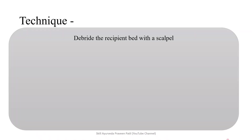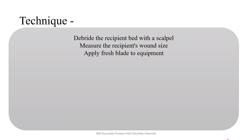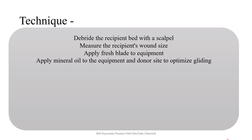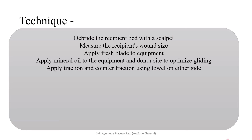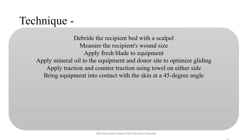Coming to the technique: first, debride the recipient bed with a scalpel and measure the recipient wound size. Apply a fresh blade to the equipment. Apply mineral oil to the equipment and the donor site to optimize gliding. Apply traction and counter-traction using towels or towel clips on either side. Bring the equipment into contact with the skin at a 45-degree angle and harvest the skin based on the type of instrument being used.